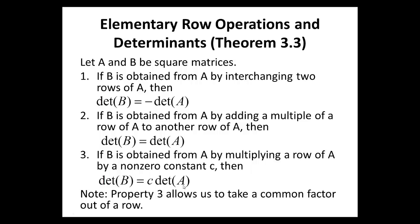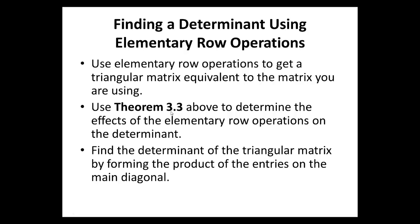Interesting. This property right here, property 3, allows us to take a common factor out of a row or out of a column. And we shall use these a lot in proofs. As a matter of fact, we shall use all three in proofs.